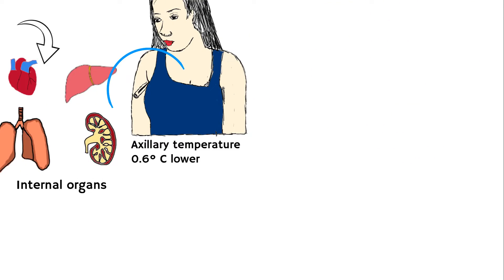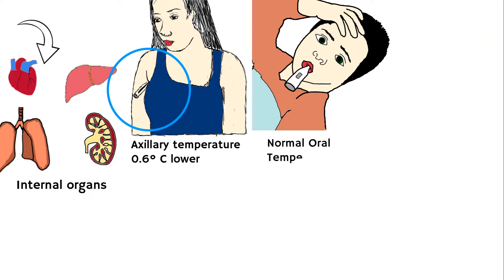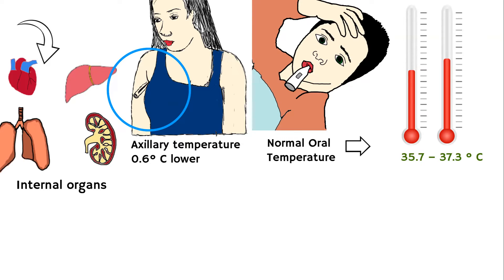Axillary temperature is around 0.6 degrees lower than core body temperature. It is difficult to define the exact number for normal body temperature, but for 95% of a healthy adult population, normal oral temperature varies from 35.7 to 37.3 degrees Celsius, and the mean temperature was 36.6 degrees Celsius.